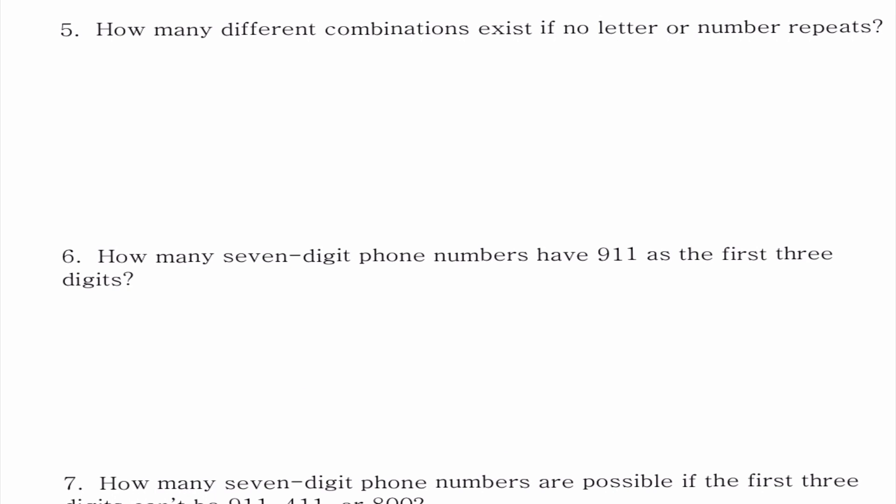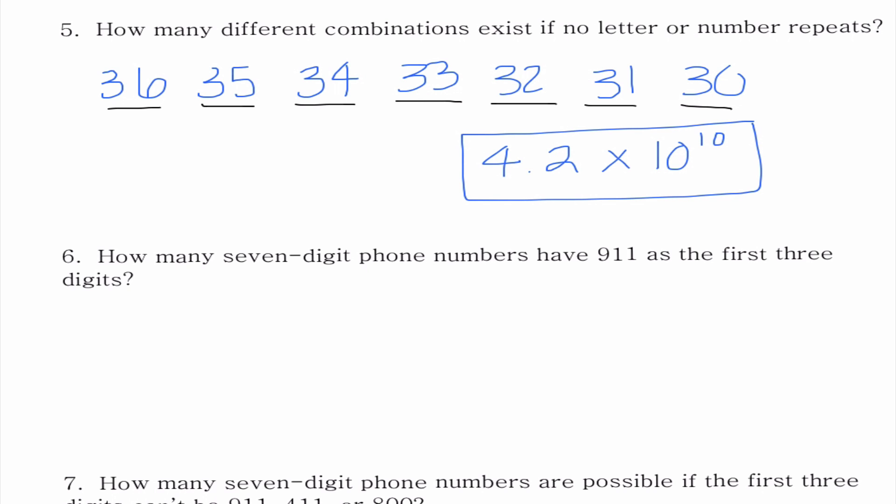Number 5 is really similar. Once again, we have this license plate. So 1, 2, 3, 4, 5, 6, 7. But this time it tells us that no letter or number repeats. So we know that there are 36 options to begin with. Now, if whatever we put here cannot repeat, that means that we only have 35 options in the next place. And if these two can't repeat, we only have 34 options. And then 33, 32, 31, and 30. If we multiply these together, we get another really big number. But it's definitely smaller than the one we had previously. We get 4.2 times 10 to the 10th power. So what we're seeing here is that the ability to repeat values gives us a lot more options for our license plate.